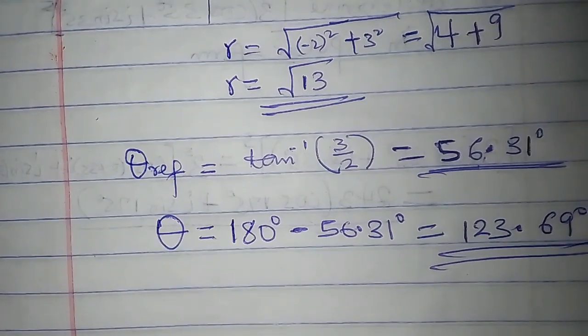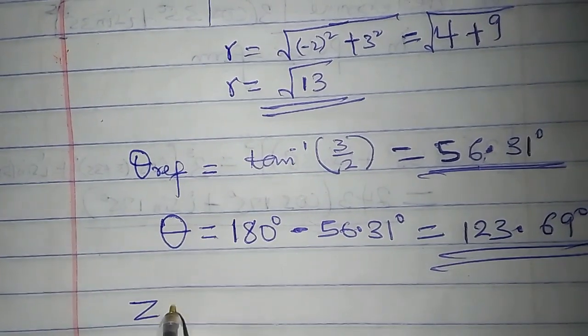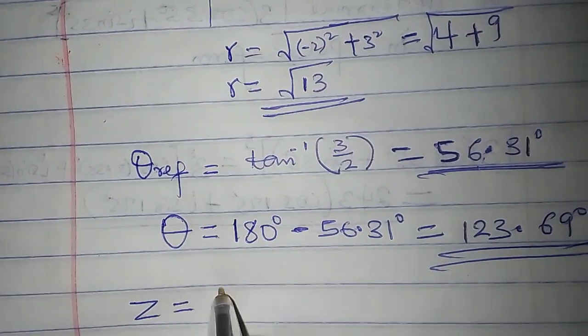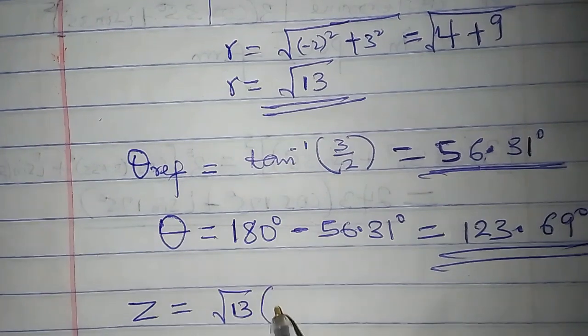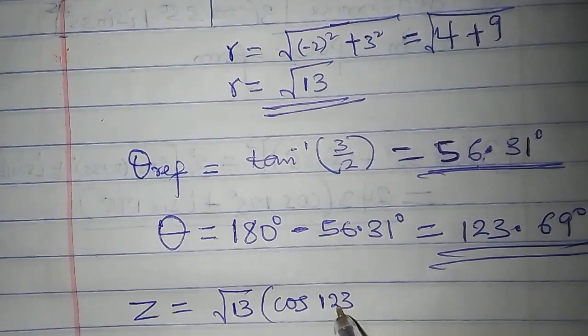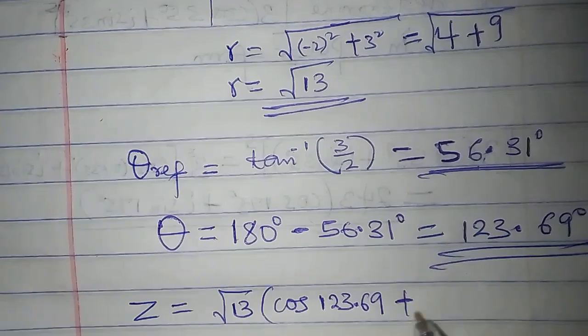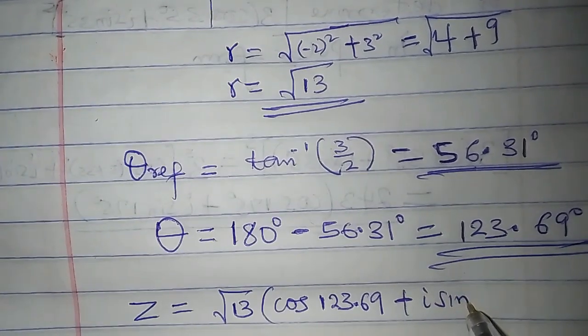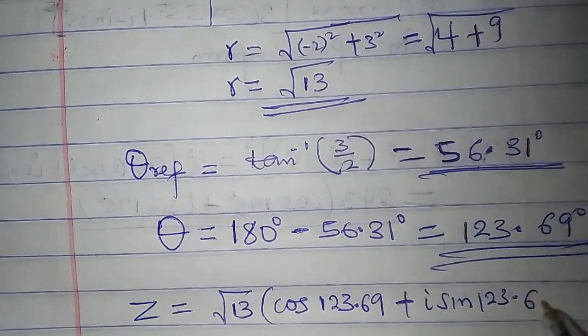Therefore, the polar form is z equal to root 13 times cos 123.69 degrees plus i sine 123.69 degrees.